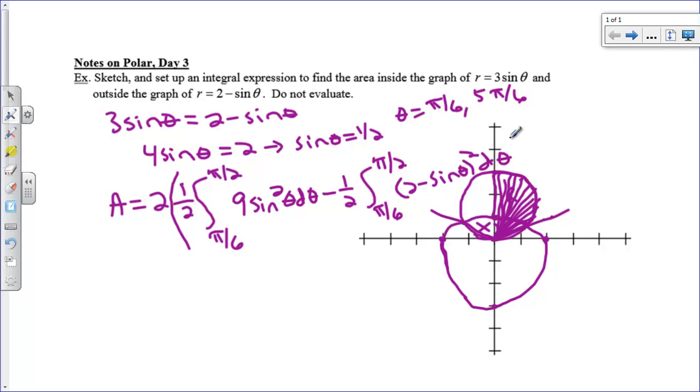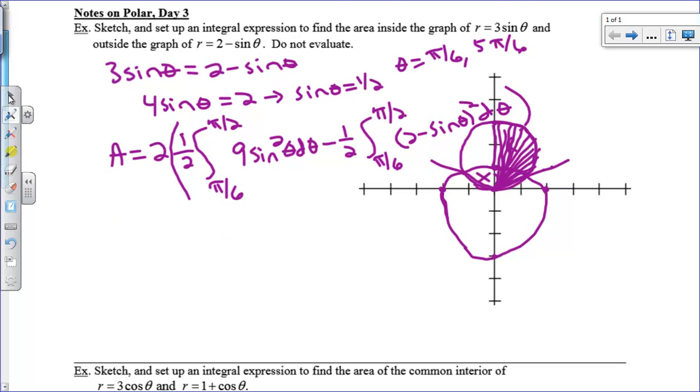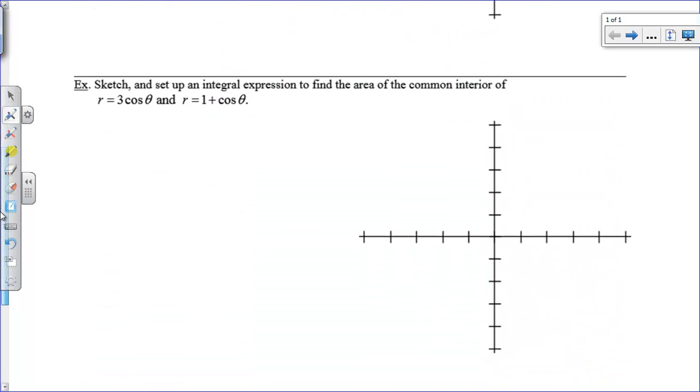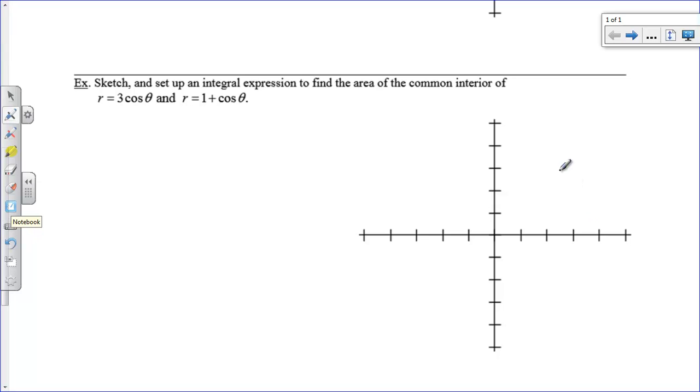So it's a subtraction problem and I had to find a point of intersection to figure out when I was going to start collecting that area. So that would be my answer, whatever that works out to be. I'm supposed to just sketch and set up the integral expression and not evaluate it. All right, so let's take a look at a common interior question and let's also make fun of Mr. G's graphing some more.